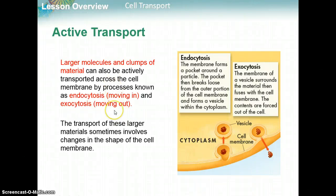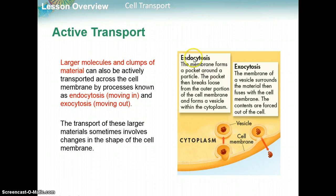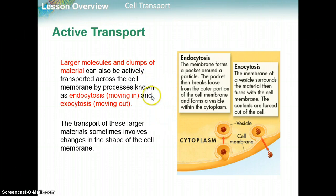We left off on the idea that active transport — when you're moving large molecules into the cell, that's endocytosis, or moving large clumps of molecules outside the cell, that's exocytosis. Whenever you're moving something really big, you're going to need lots of energy. So these two types of transport fall under the active transport category because they require energy to make the vesicle and move it around.